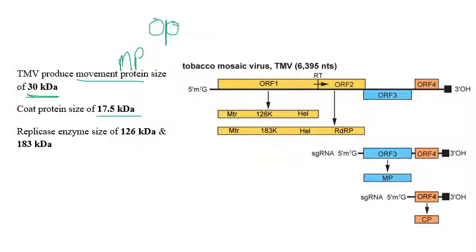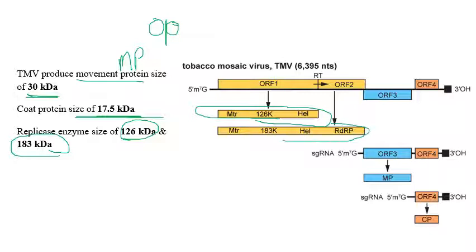The coat protein size of TMV is 17.5 kilodaltons. The replicase enzyme produced by TMV for replication comes in two types: a 126 kilodalton form and a 183 kilodalton form. So TMV produces a movement protein of 30 kDa, a coat protein of 17.5 kDa, and replicase enzymes of 126 kDa and 183 kDa.